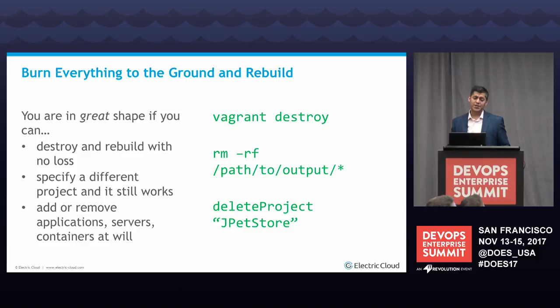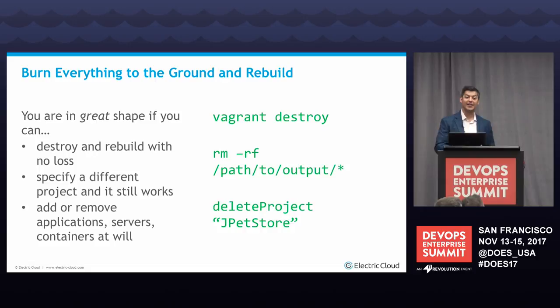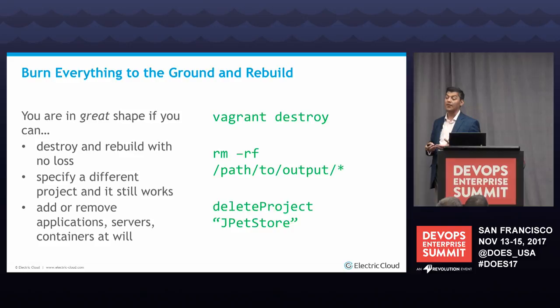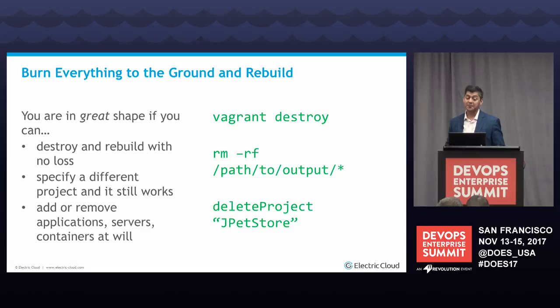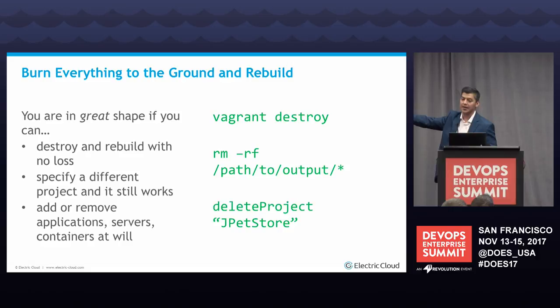This is one of my favorites — my team thinks I'm crazy. I do a lot of tests and I destroy my machines: delete the VM, delete the Vagrant, and rebuild it. If you can destroy everything to the ground and rebuild it, then you're in great shape. Delete it, rebuild it — it works. Delete it here or build it over there — it works. You may not need to solve that problem for your business, but you have a lot of independence: I need to have this set up and it's taken care of. For those who use Vagrant, vagrant destroy is popular, or deleting everything in a directory. Or for API-based tools, there's a sub-command for deleting projects or whatever. If you can do this, you are in a much better spot with process as code.